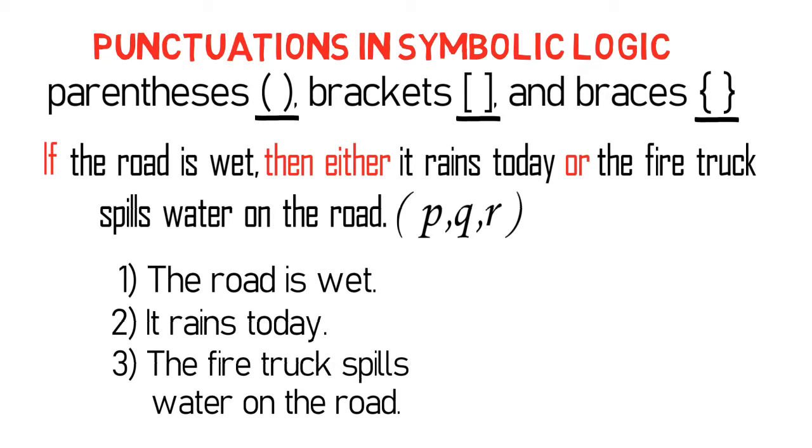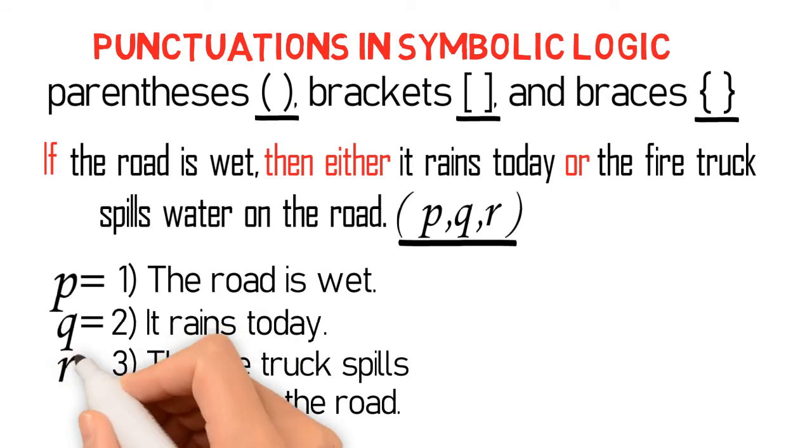And as I already discussed in the previous editions, we learned that the variables provided after the proposition represent the propositions in the entire proposition, respectively. Thus, in this example, P stands for the road is wet, Q for it rains today, and R for the firetruck spills water on the road.